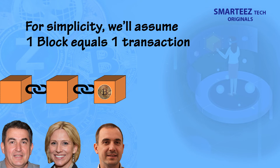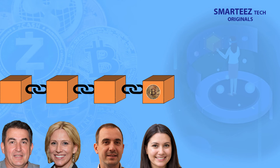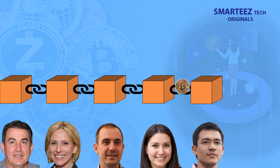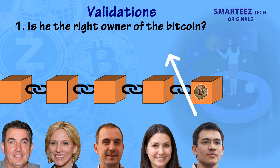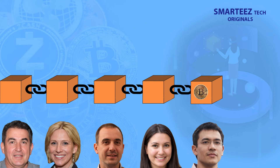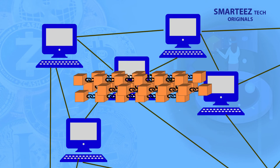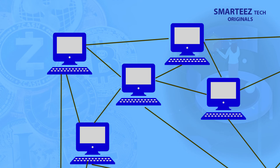For each transaction, a new block is added. The block is actually about 1 megabyte in size, and as many transactions as can fit in 1 megabyte will be part of a block. Let's say the bitcoin used to buy the diamond ring has already undergone 5 transactions — each transaction being 1 block in the blockchain. Before the transaction gets added to a block, validations are made to confirm you are the real owner of the bitcoin and have enough of it, by looking at previous transactions. When you make the 6th transaction, the block gets added to all computers that are part of the blockchain network involved in record keeping and monitoring.